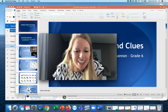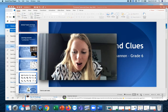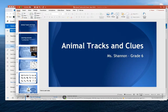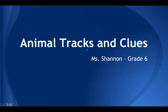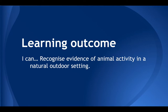Today what we're learning about is animal tracks and clues. With the page that you had yesterday, go ahead and bring that out. There are only a couple of things that we really need to write down today. The learning statement is: I can recognize evidence of animal activity in a natural outdoor setting. The title is Animal Tracks and Clues.